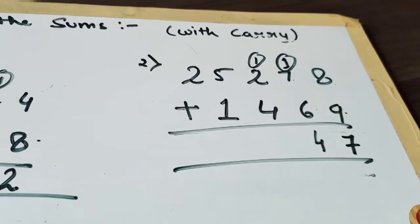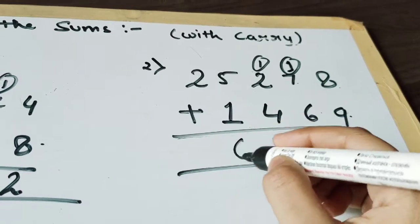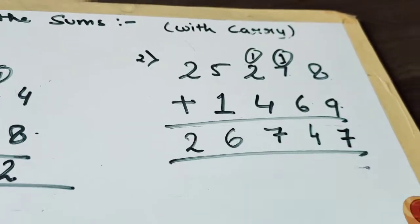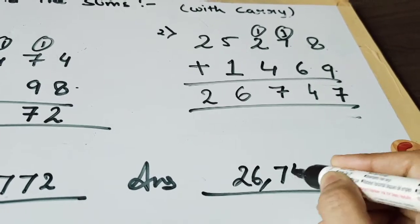Now 4 plus 2 is 6, plus 1 is 7. 5 plus 1? Yes, 6, then 2. Now write the answer: 26747.